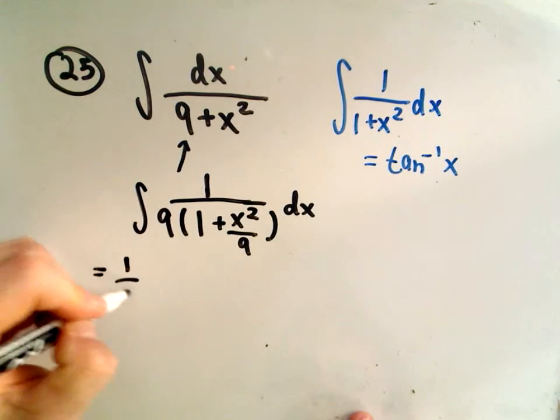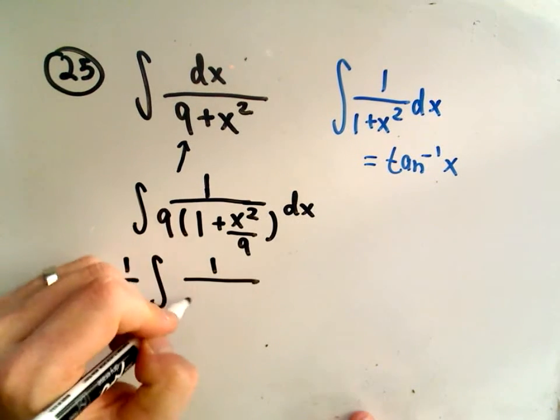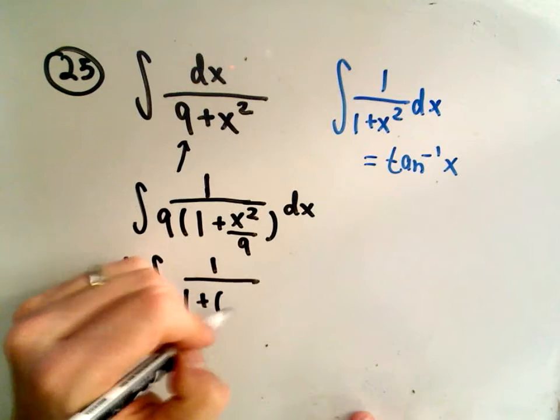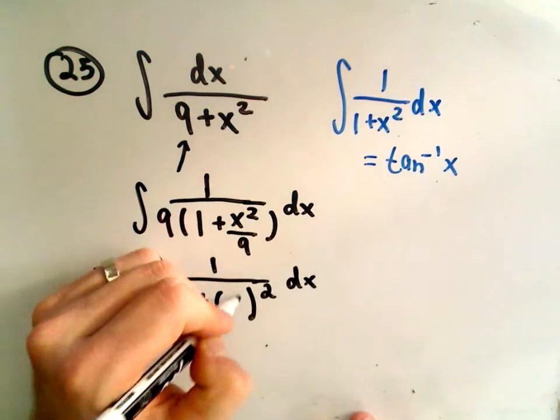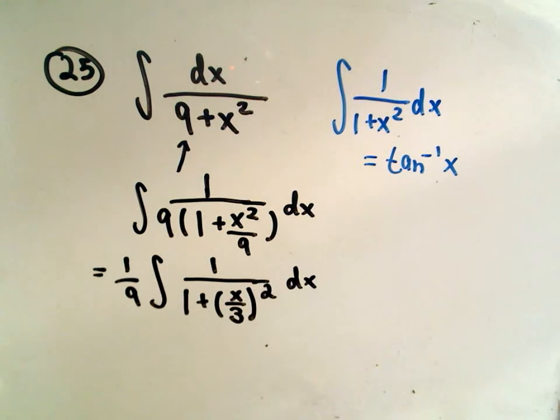So I'm going to factor the 1/9th out front. And what I'm going to do now is I'm going to rewrite x squared over 9 as a quantity squared. Well, I think if we write that as x over 3 quantity squared, if we square the top and square the bottom, we'll get back x squared over 9.